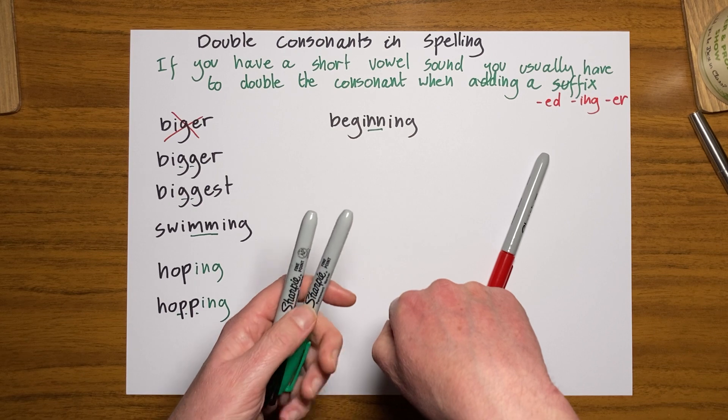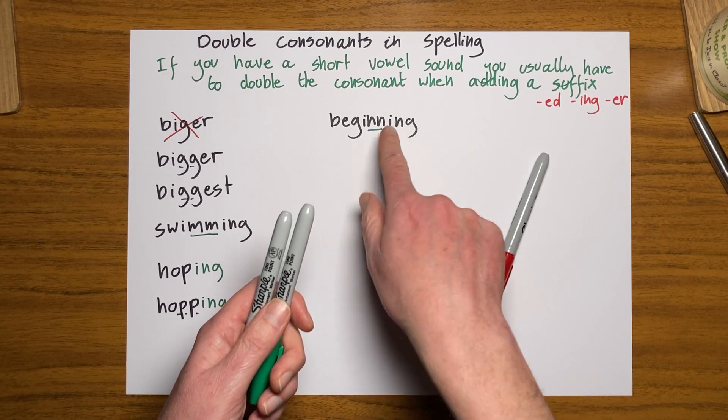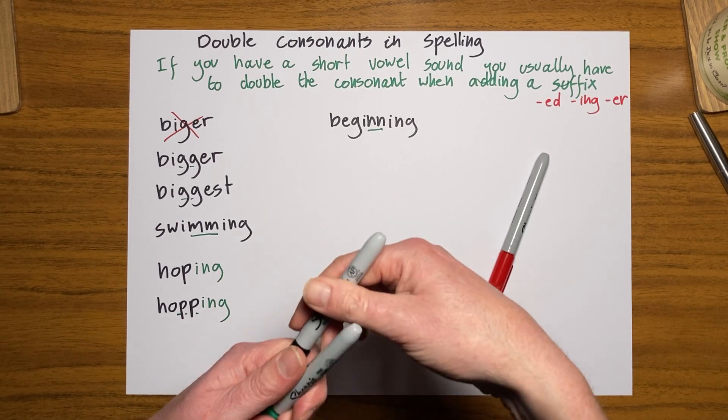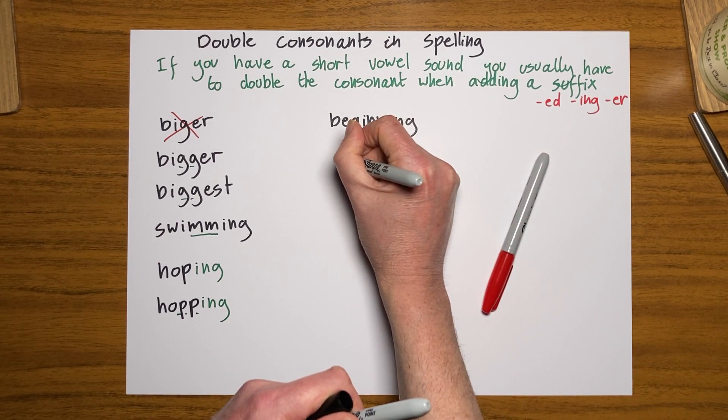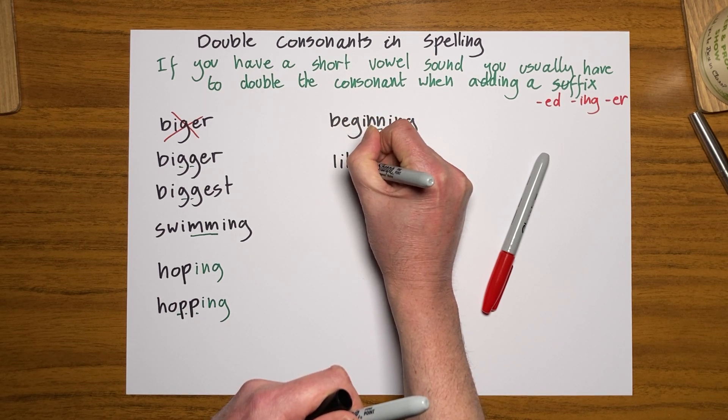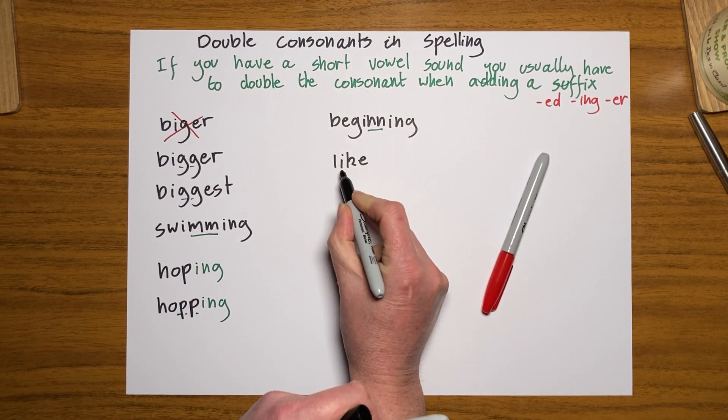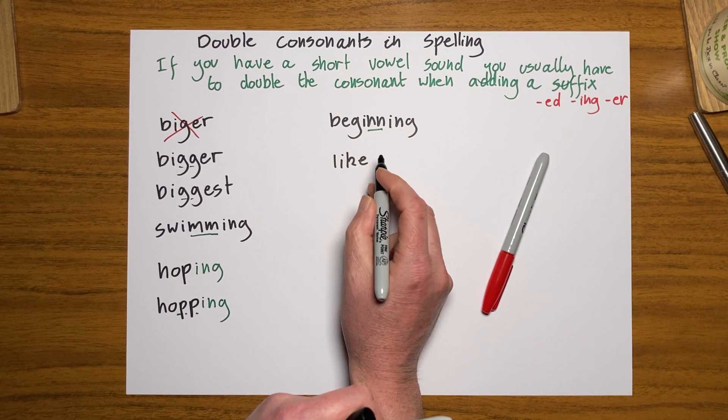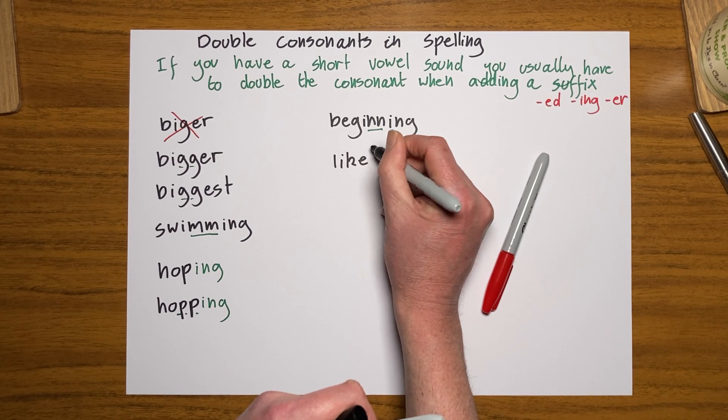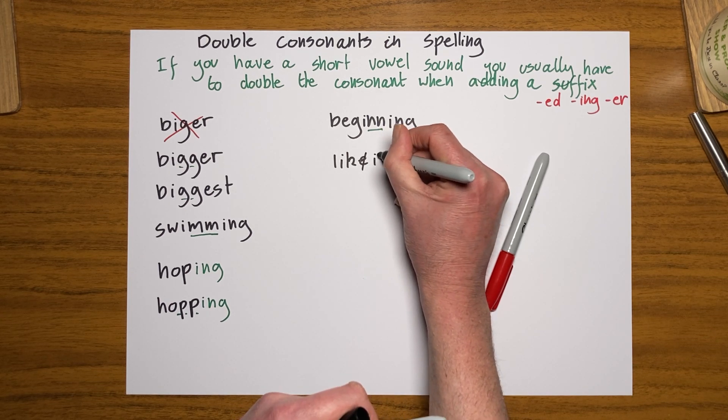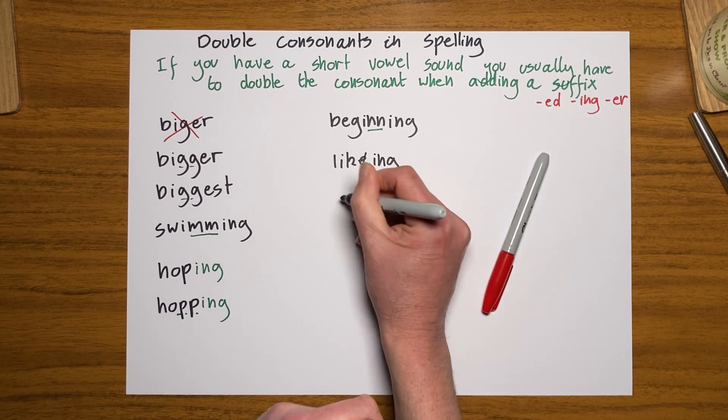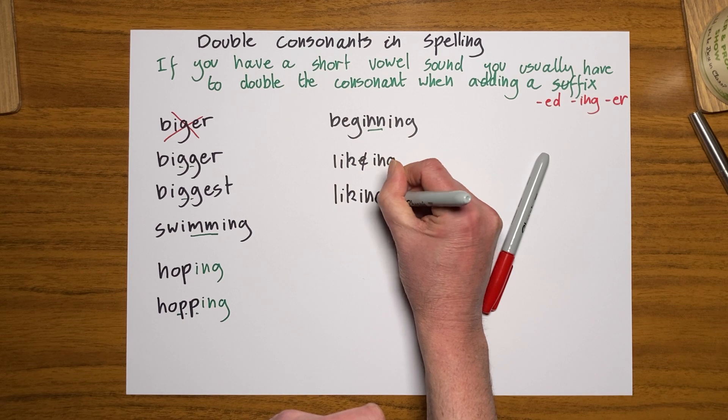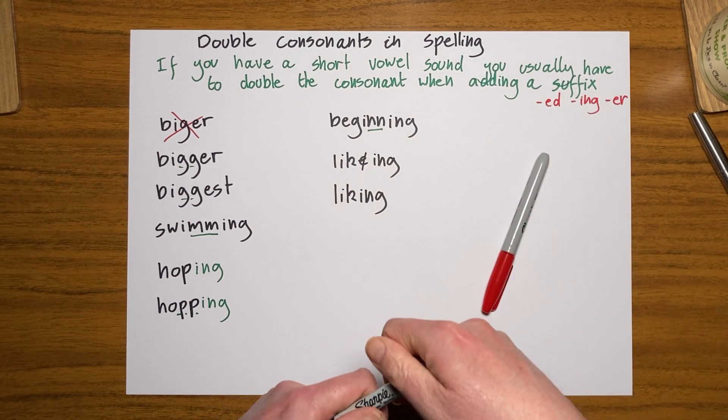If it's a long vowel sound, then I don't need to double the consonant. So for example, if I have got like - well, this has already got an E at the end of it. So that's making that an I sound. And if I want to make that liking, then I need to get rid of that E, and then I can just add my ING on the end of it to give me liking. I am liking the taste of this ice cream very much.